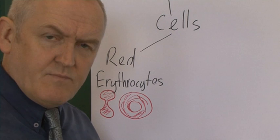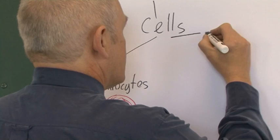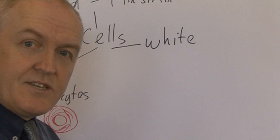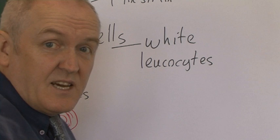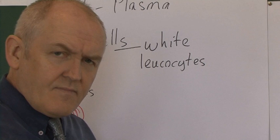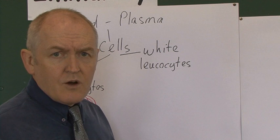What we're particularly interested in, in the context of the immune system, are the white blood cells. The white cells are correctly termed the leukocytes. If there's an increase in the number of white blood cells in the blood, that's called a leukocytosis.